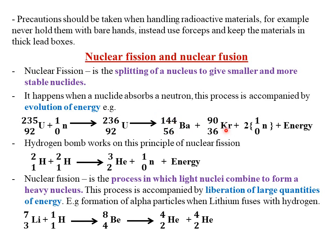It is also going to form krypton, which has a mass number of 90 and atomic number 36. Then we are also going to have two neutrons, each having a mass number of 1 and no atomic number. Then we have evolution or production of energy in this process.